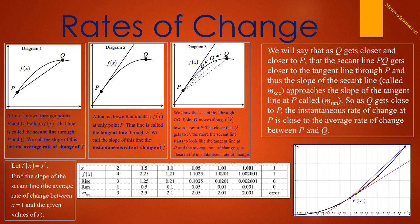The Q values: our first Q value is 2, and f of 2 is 4. So we figure out the slope of the secant line, which is rise over run. The rise is 3, the run is 1, and therefore the slope of the secant line is 3. We do this for the values of x being 1.5, 1.1, 1.05, 1.01, and 1.001. We get extreme accuracy, and what we find is that the slope of the secant line keeps getting smaller and smaller. At x equals 1.001, the slope of the secant line is 2.001.